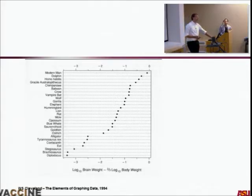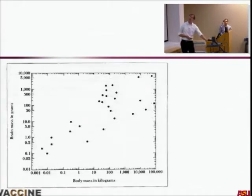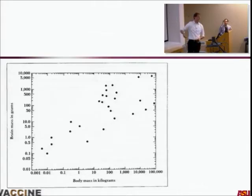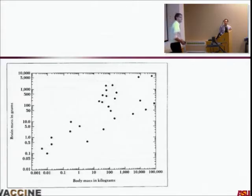We want to think about how not to lie with visualization. When I ask you where humans are, I'm tricking you into thinking humans should be in the upper right because they're the most important and should have the highest brain function. But based on the data, we don't wind up there, simply because this is body mass in kilograms and humans don't weigh as much as elephants, for example.